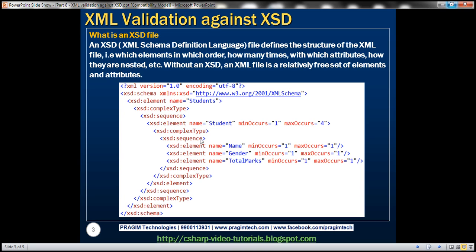The XSD we have here specifies that within a given XML file, the root element should be named 'students'. Directly underneath that root students element, we should have a student element. Notice that minOccurs is set to one and maxOccurs is set to four, meaning we should have at least one student element and no more than four. Each student element should have name, gender, and totalMarks elements, present in that order.